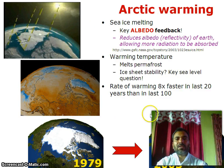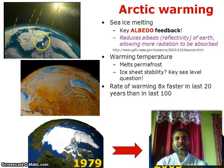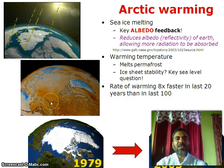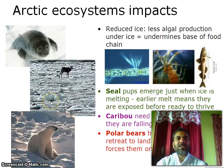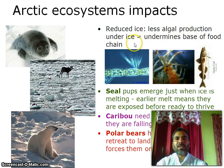Looking at the situation: sea ice is melting and warming temperatures show a rate of warming 8 times faster in the last 20 years than in the last 100 years. Ecosystem impacts include reduced ice, less algae protection under ice, which determines the base of food chains — affecting polar bears and other wildlife.